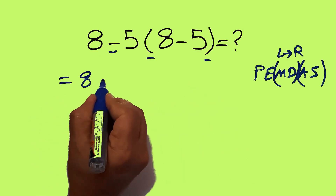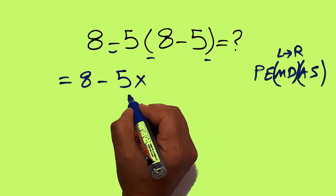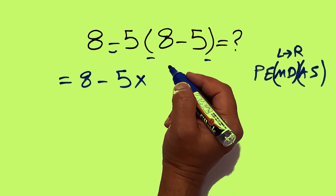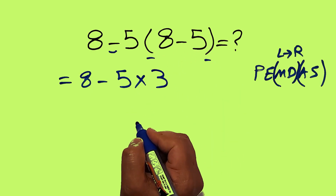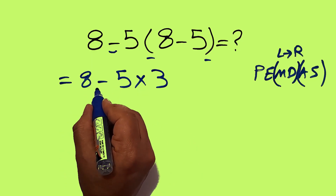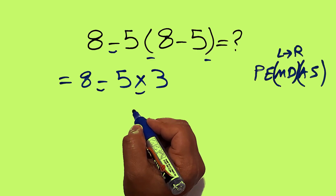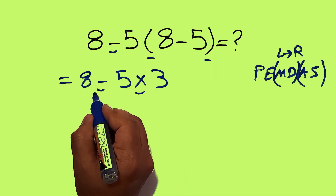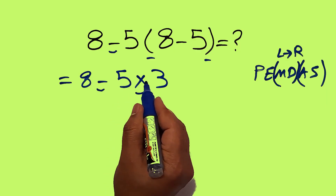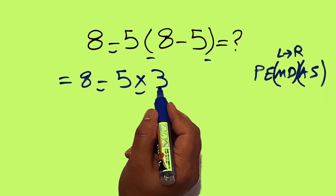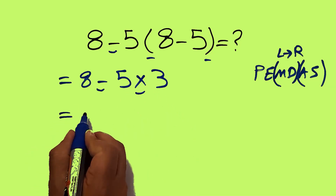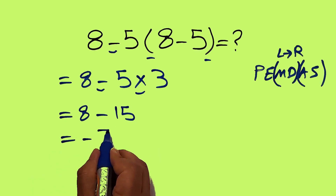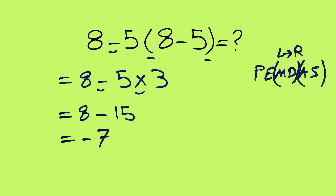According to PEMDAS, first we have to handle these parentheses. So 8 minus 5, then times these parentheses. Inside these parentheses we have 8 minus 5, which equals just 3. Now we have this subtraction and this multiplication. According to PEMDAS, multiplication has higher priority than subtraction, so we have to do this multiplication first. 5 times 3 equals 15. So 8 minus 15, and this is equal to negative 7. So our final answer to this problem is negative 7.